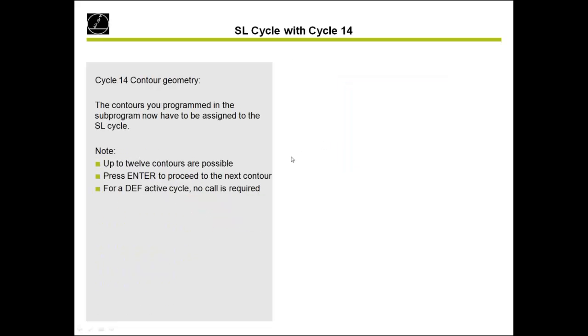Starting with cycle 14: in cycle 14, you can combine up to 12 contours — for example, one pocket and inside it up to 11 islands. You simply combine the contour numbers you want to use.